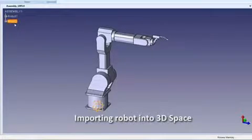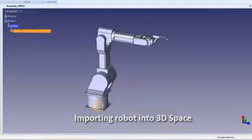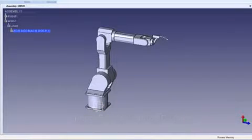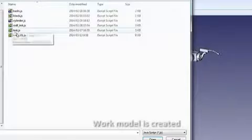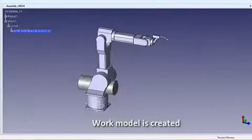In this example, we start by importing the robot into 3D space. In this sample application, we will utilize JavaScript for the modeling functions. A JavaScript file is loaded and a work model is created.